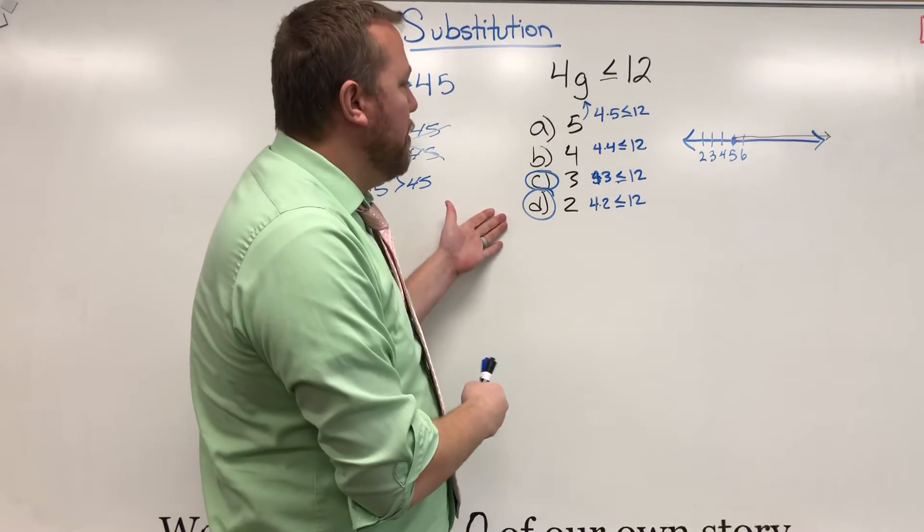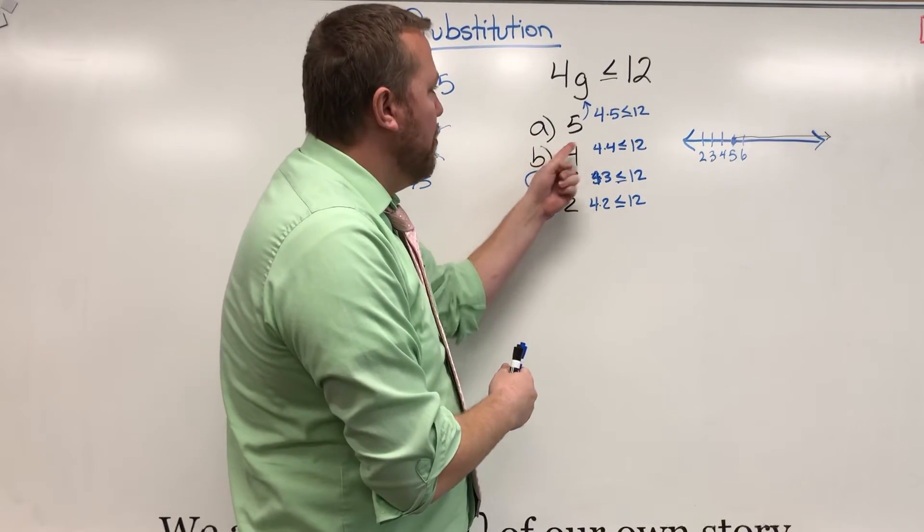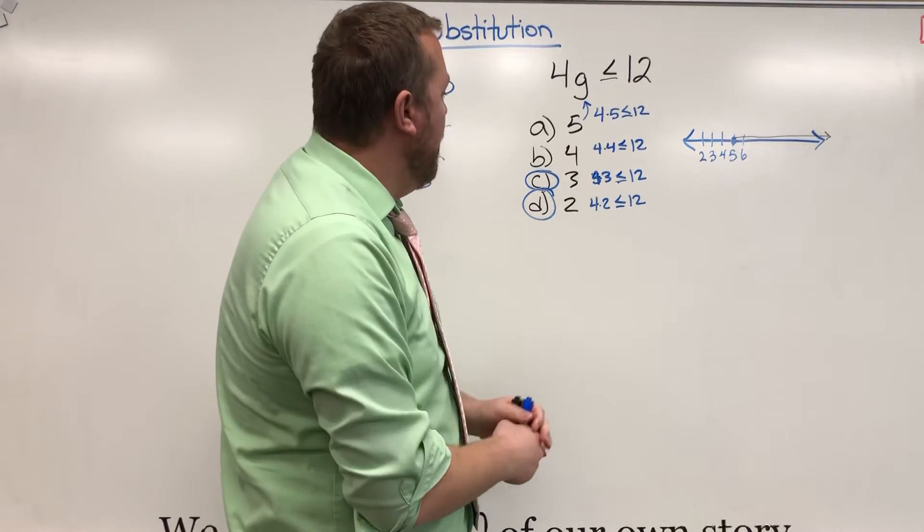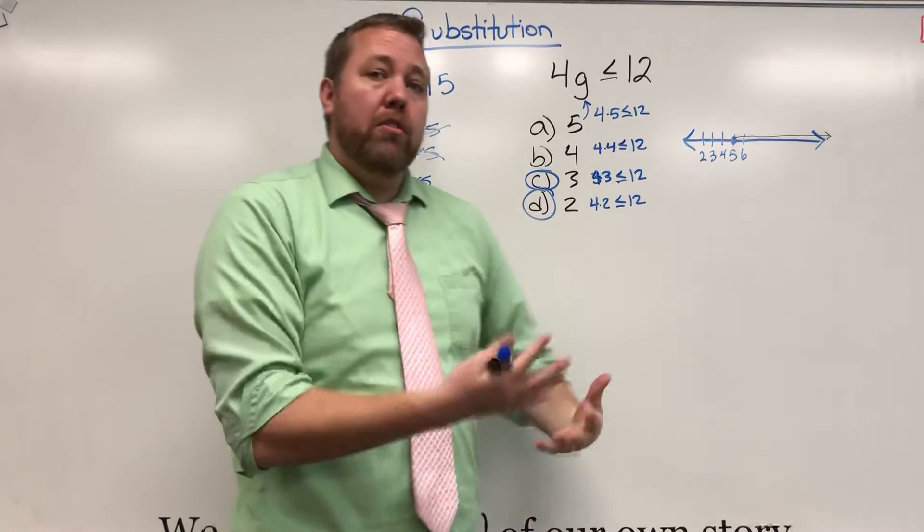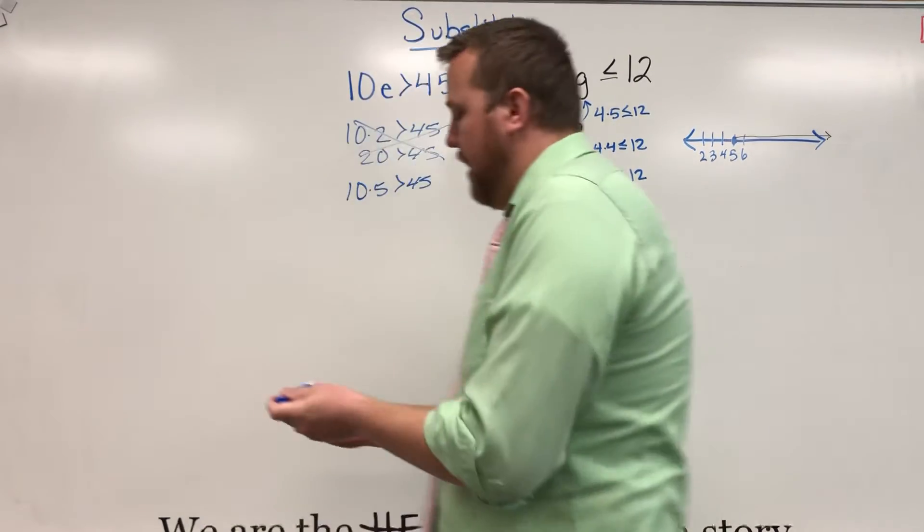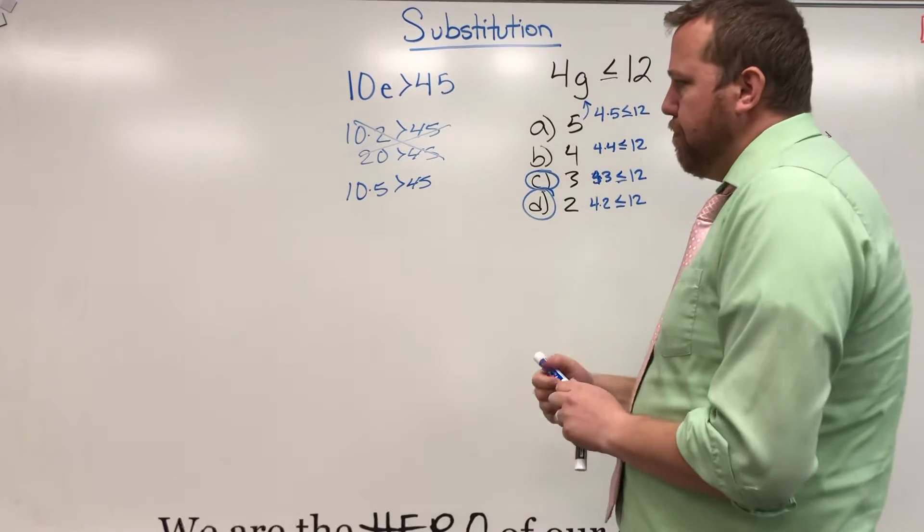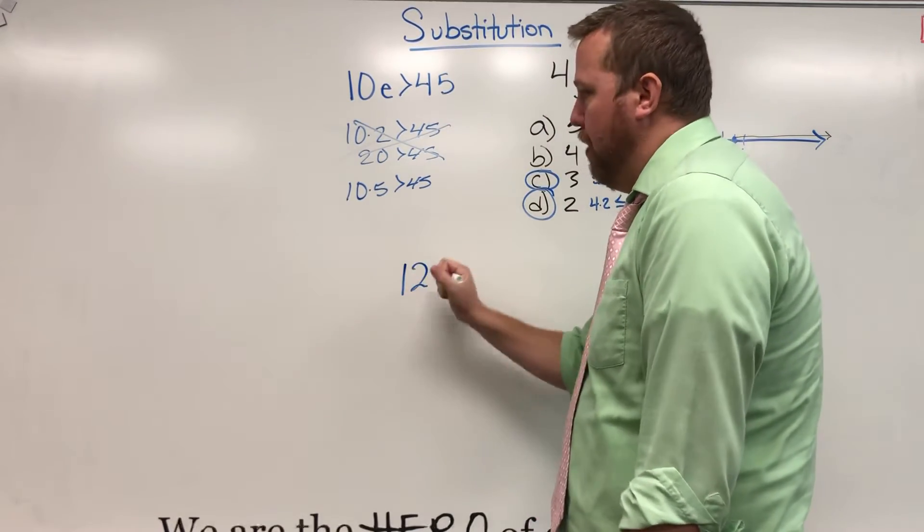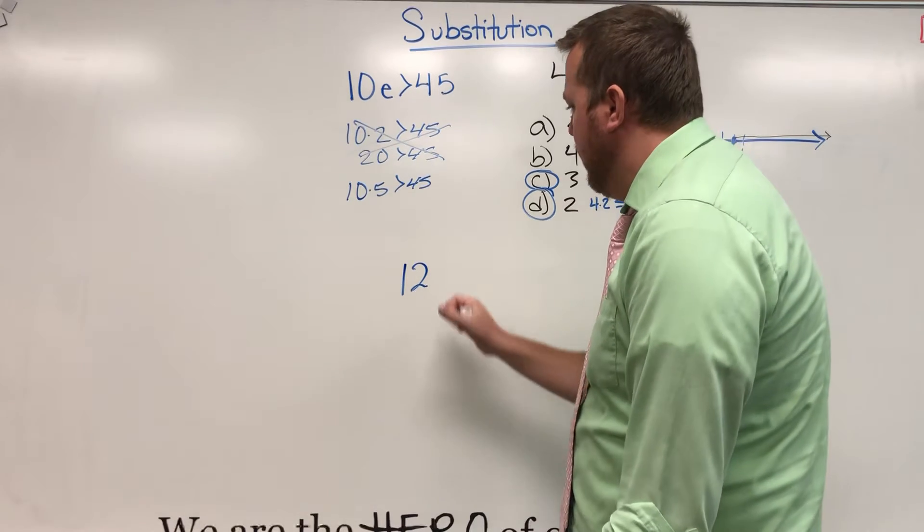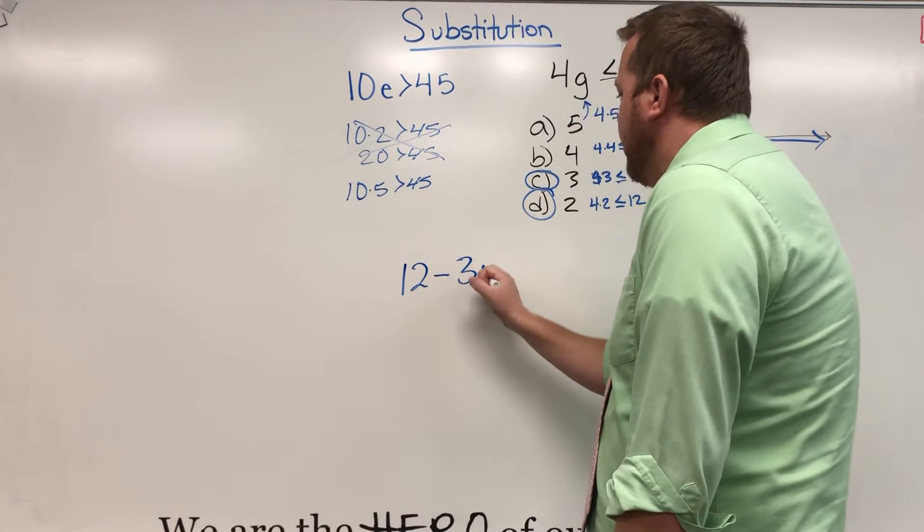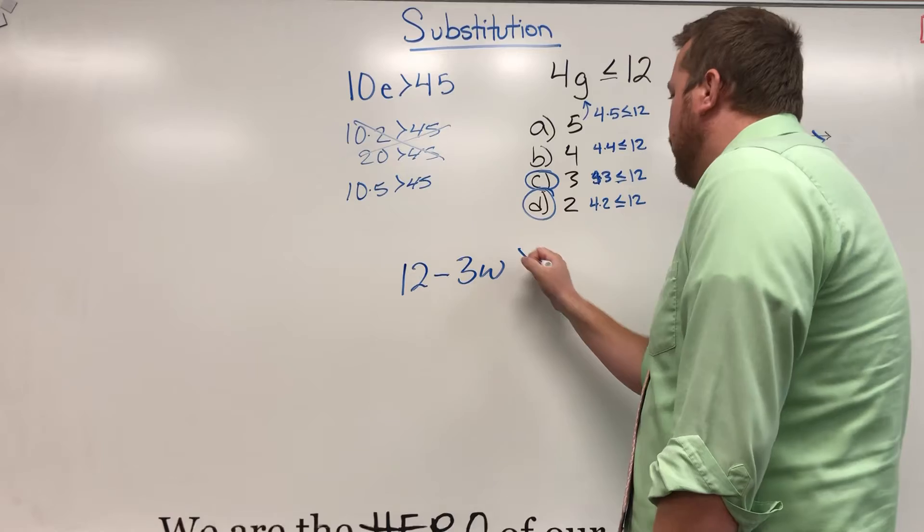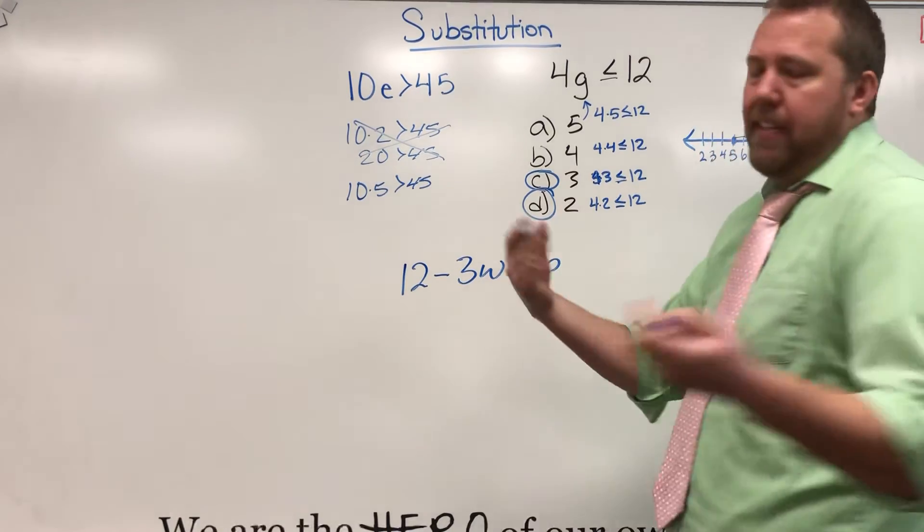So if you have four options, you just substitute those numbers in for the variable, and those two work. So that question has two possible answers. Now what if we went, again, with just a little two-step one? Let's say 12 minus 3w is greater than or equal to 6.